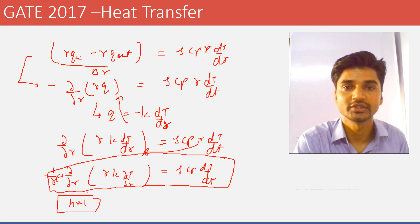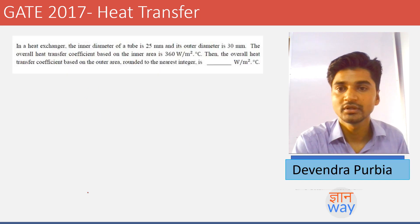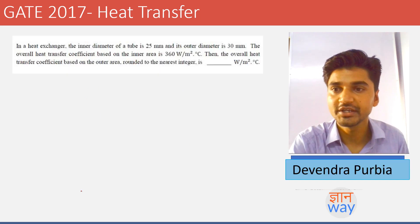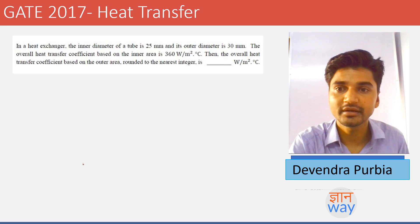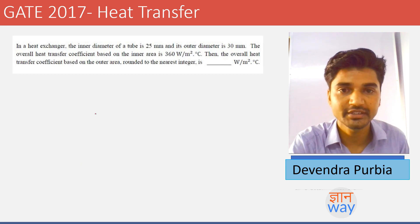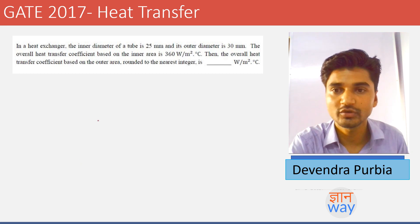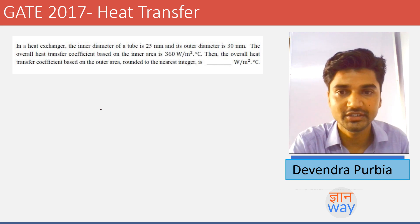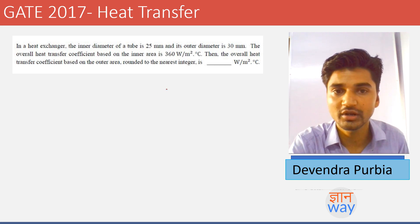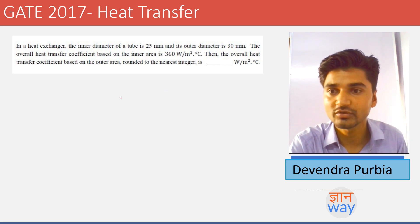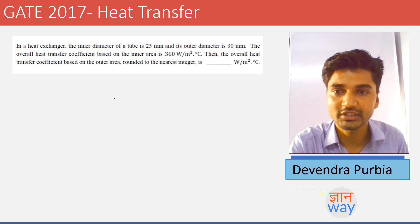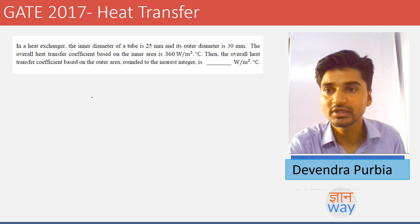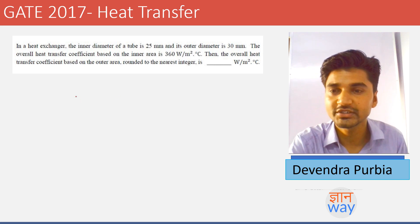The next question involves a heat exchanger where the inner diameter of a tube is 25 mm and its outer diameter is 30 mm. The overall heat transfer coefficient based on the inner area is 360, and we need to find the overall heat transfer coefficient based on the outer surface.